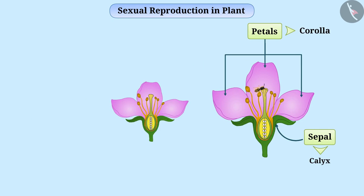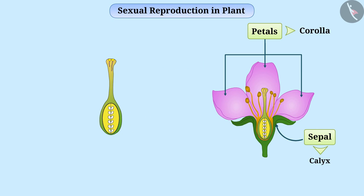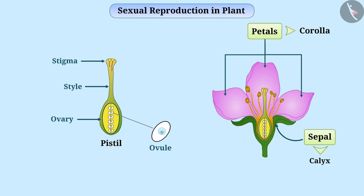In the centre of the flower, you will see a jug-like part called the pistil. It is the female reproductive part of the plant and has three parts. The swollen bottom part is the ovary. The middle elongated part is the style. And the terminal part, which may be sticky, is the stigma. The ovary contains ovules and each ovule has one egg cell. The egg cell is the female gamete of the plant.